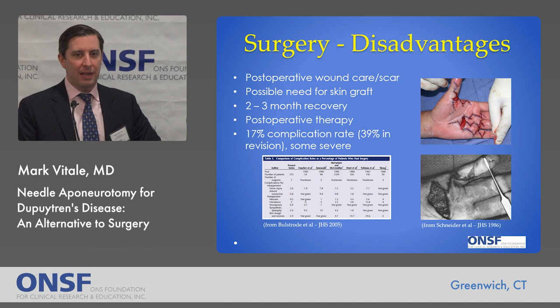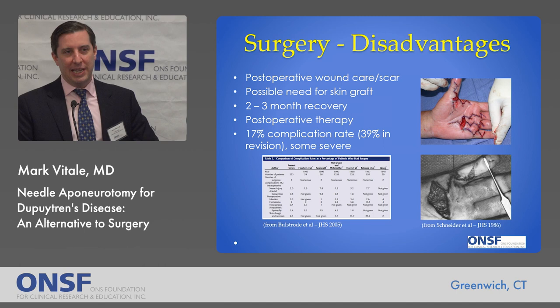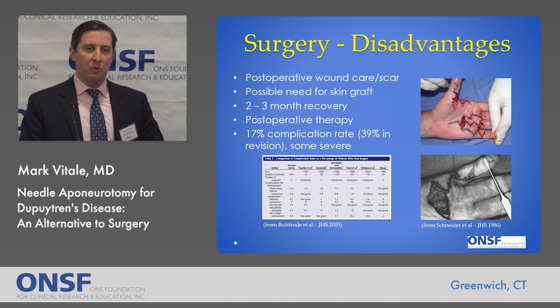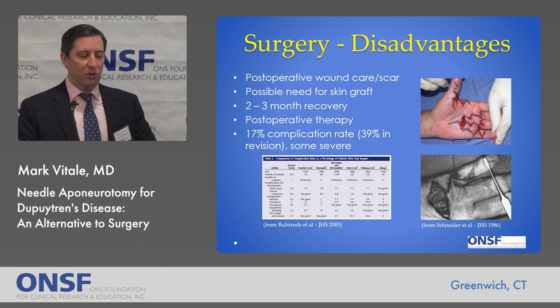However, surgery has the hardest recovery — there are often big scars, difficult post-operative wound care, and occasionally skin grafts are required. Extensive therapy is required because patients get quite stiff, and many patients don't realize it's a real hindrance for about two to three months until full recovery. There is a notable complication rate — about 17% in primary cases and 39% in revision cases — with some severe complications including nerve and arterial injuries and amputation.